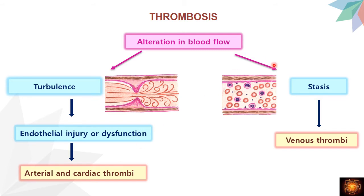When there is stasis — no flow of blood — there is no laminar flow. Cells come in contact with endothelial cells; when WBCs contact endothelial cells they cause damage and activation of endothelial cells. Additionally, in stasis there is no dilution of coagulation factors that are formed, so they activate the coagulation cascade. This is the main mechanism seen in venous thrombi.